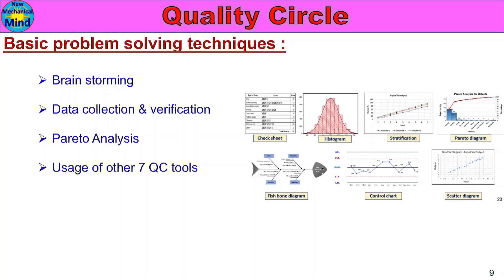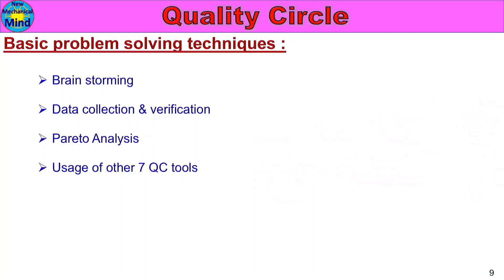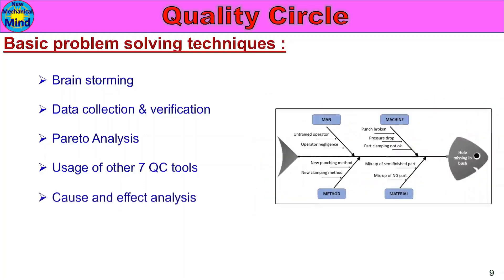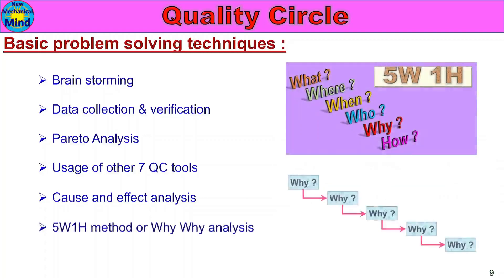Usage of the other 7QC tools: check sheet, histogram, stratification, Pareto diagram, fishbone diagram, control charts, and scatter diagram. In the 7QC tools, use whichever tool fits the problem or requirement. Cause and effect analysis — that is, the fishbone diagram — should definitely be used.